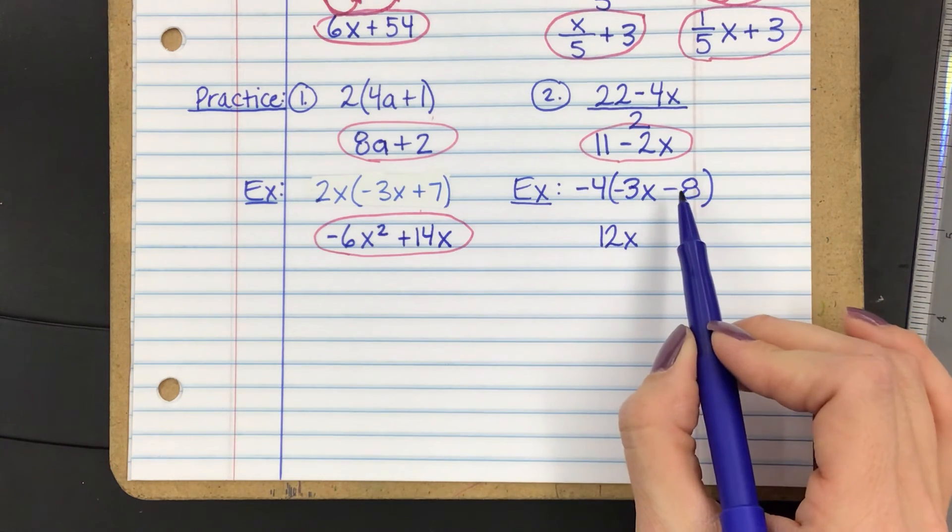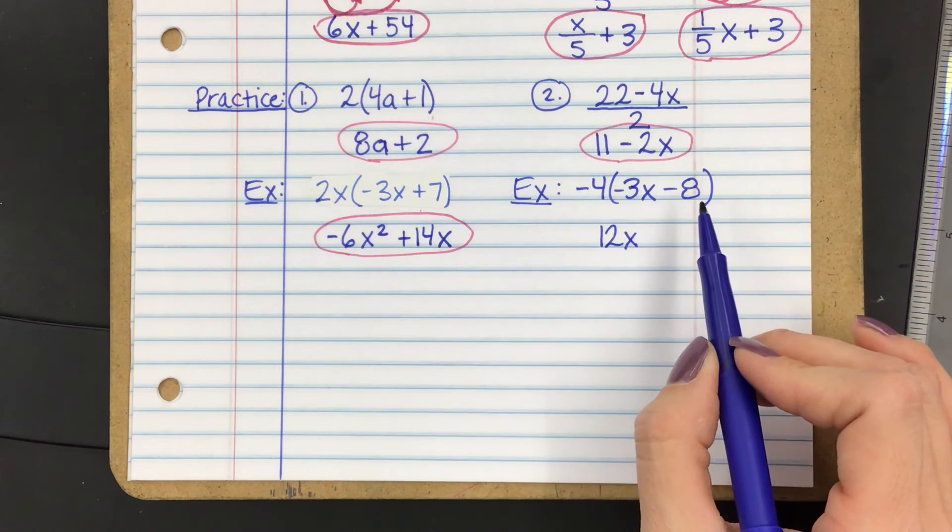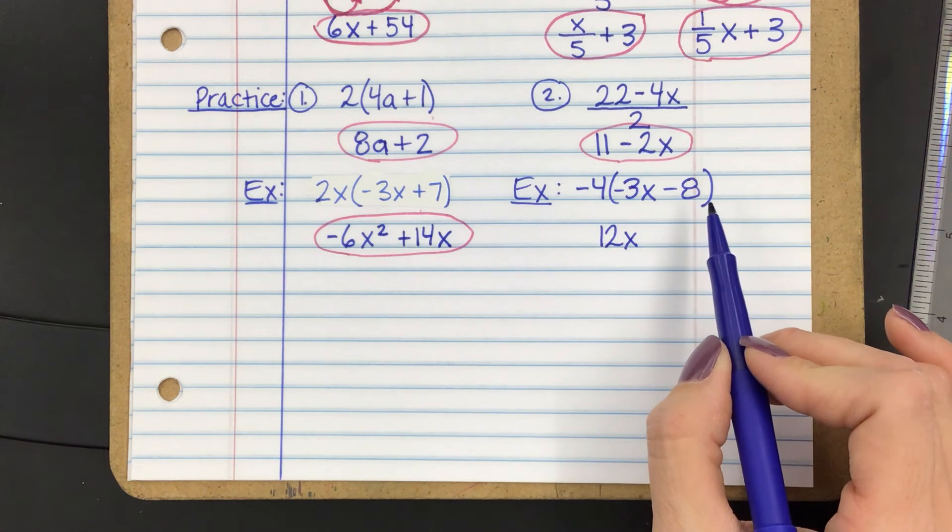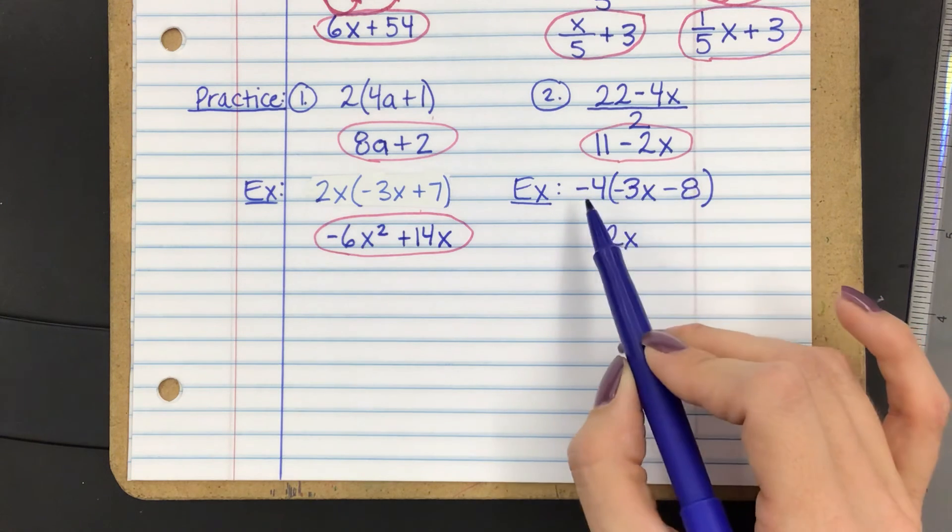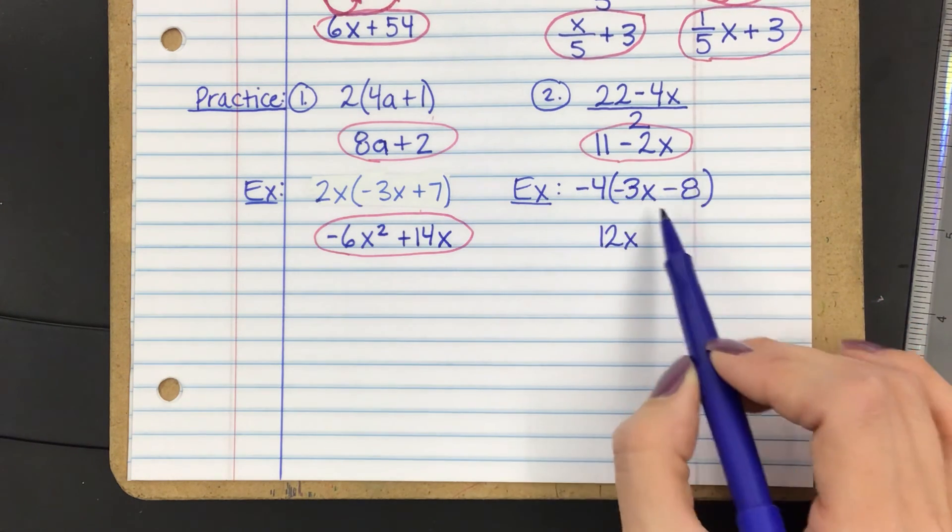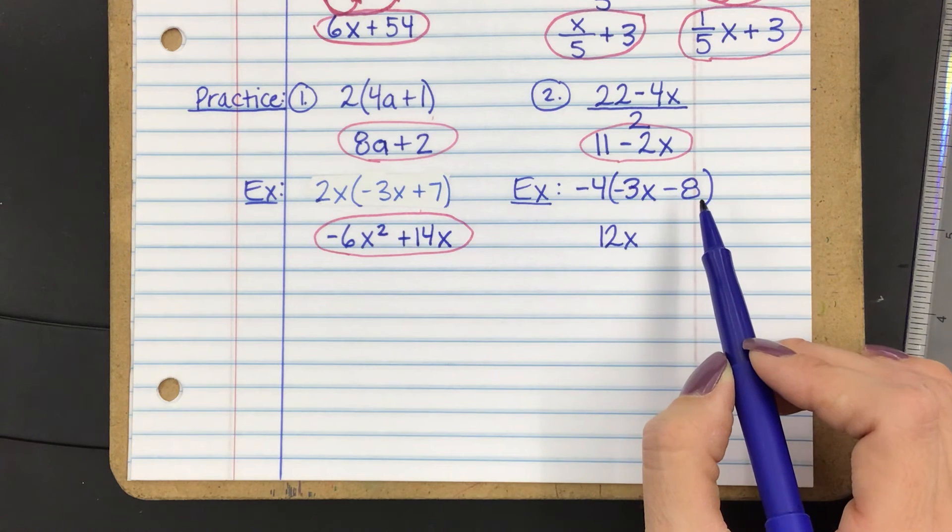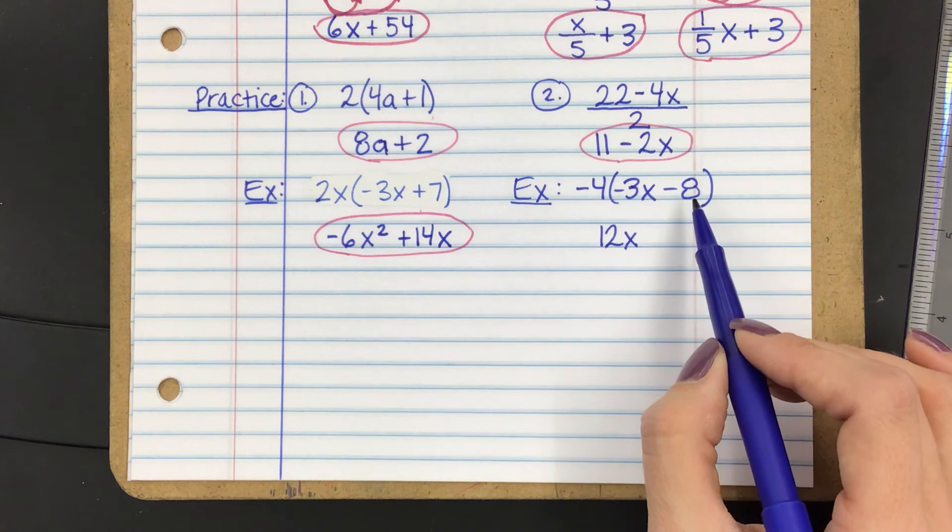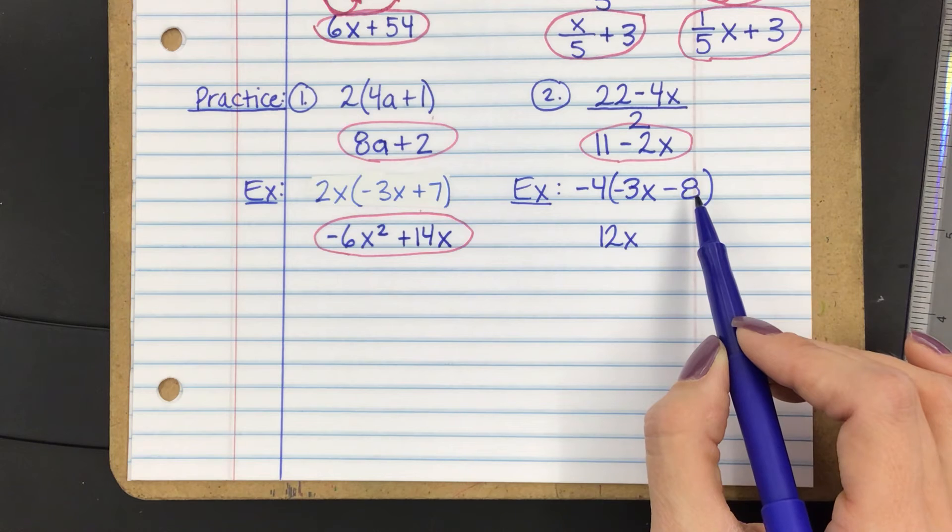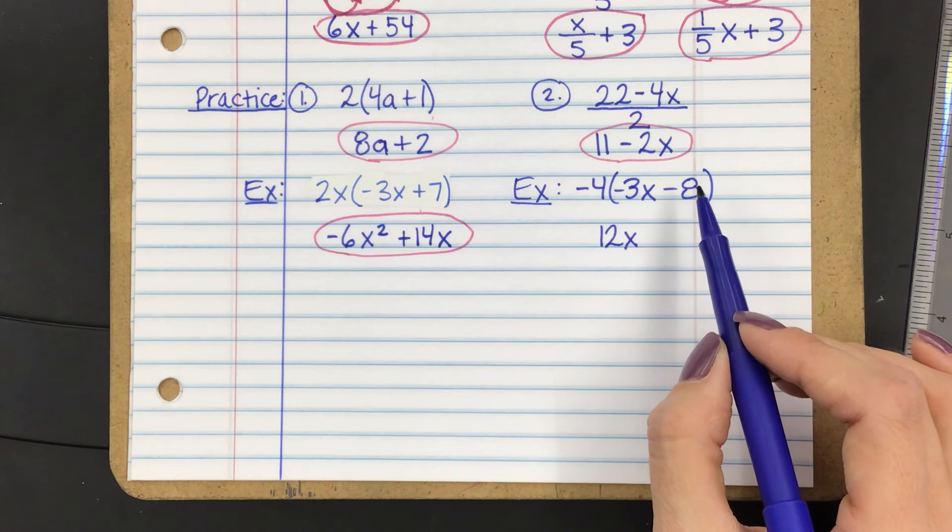Now here, see how you have minus 8? I don't want you to think of that as minus 8. I want you to think of that as negative 8. So this actually will be negative 4 times negative 8. This makes it simpler, right? Because it would just be 12x minus negative 32, or we do 12x plus 32.